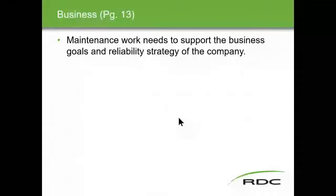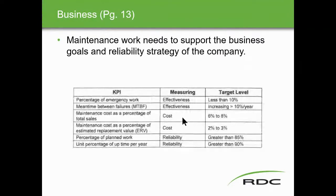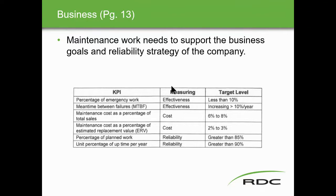The business maintenance work needs to support the business goals and reliability strategy of the company. Here's a chart on page 13. It talks about percentage of emergency work — that's a key performance indicator. We measure on effectiveness, and it's less than 10% — that's our target value for emergency work. If we look at mean time between failures, how effective is that? If it's increasing, it's greater than 10% a year. Maintenance cost as a percentage of total sales should be 6% to 8%, and maintenance costs as a percentage of replacement value should be 2% to 3%.